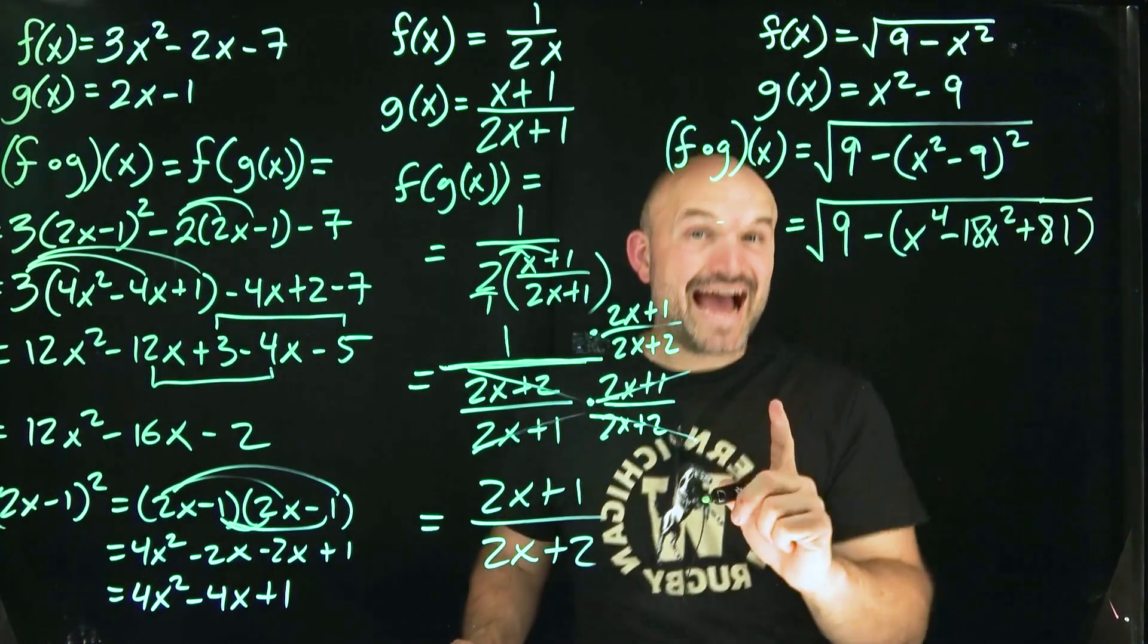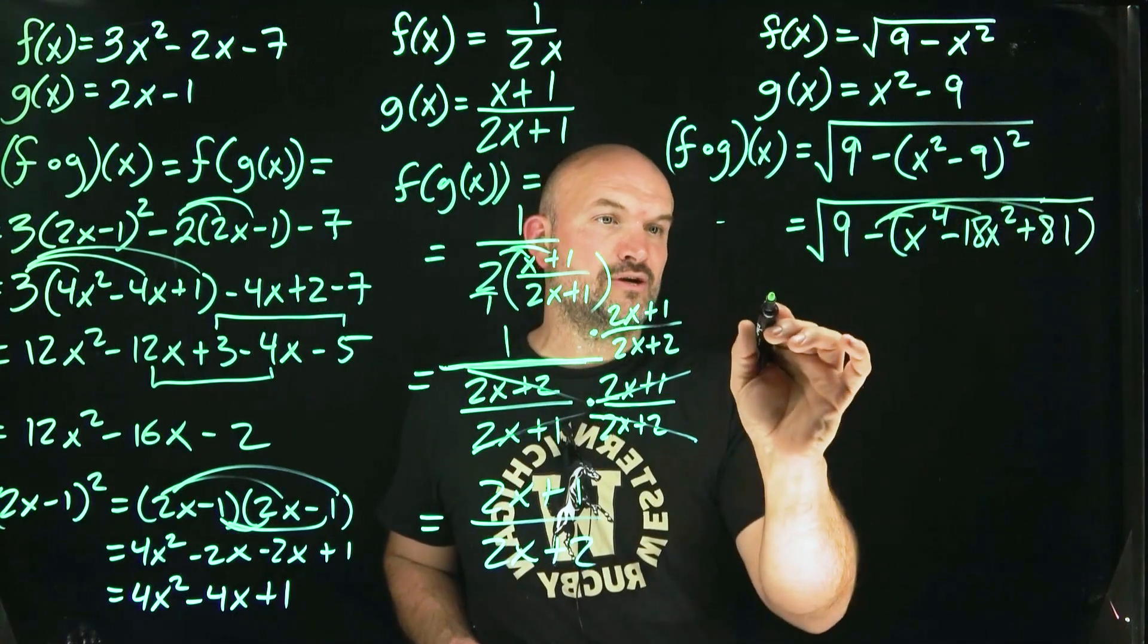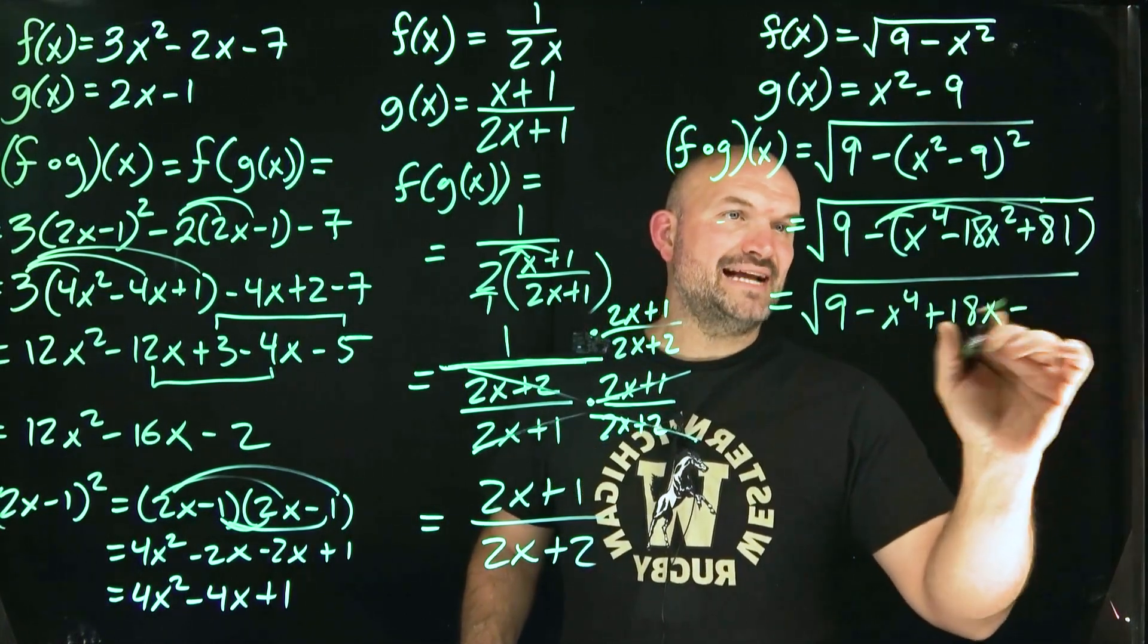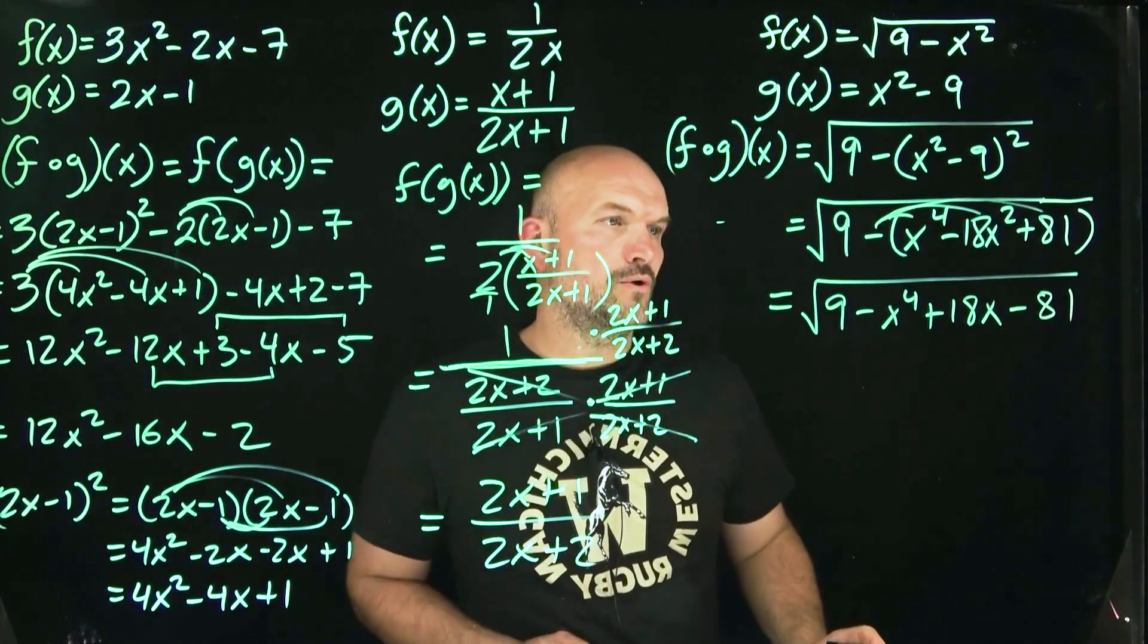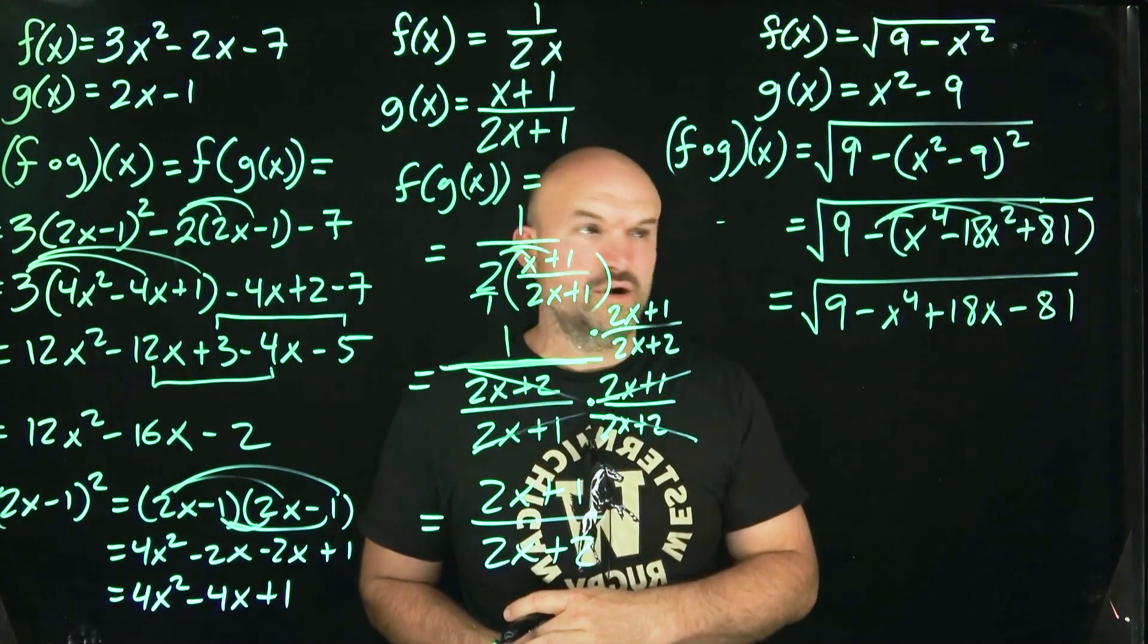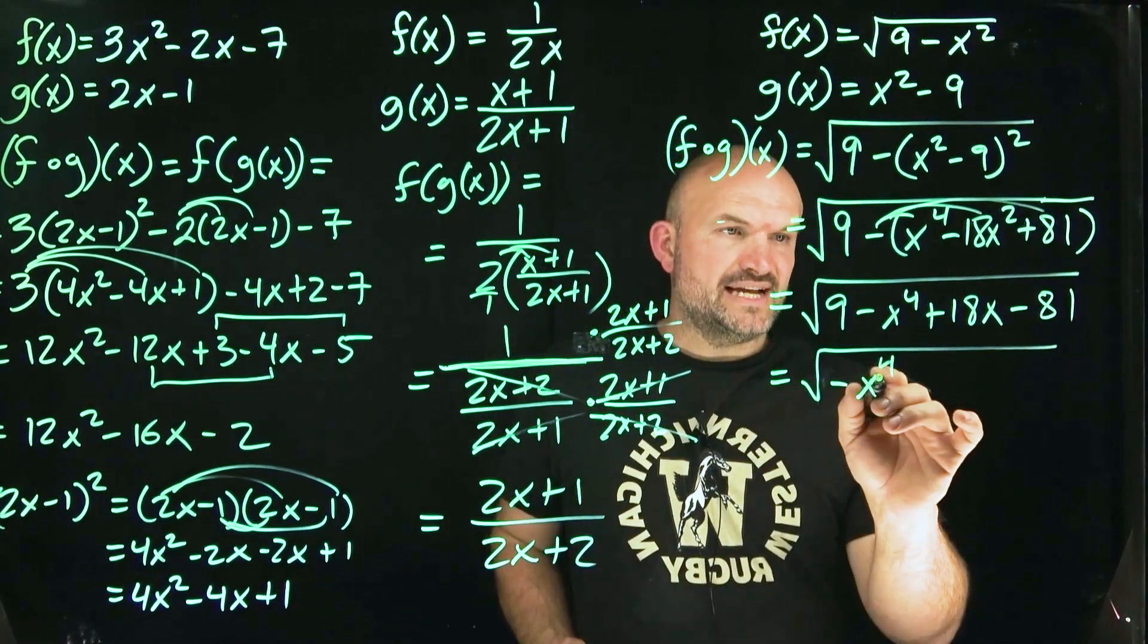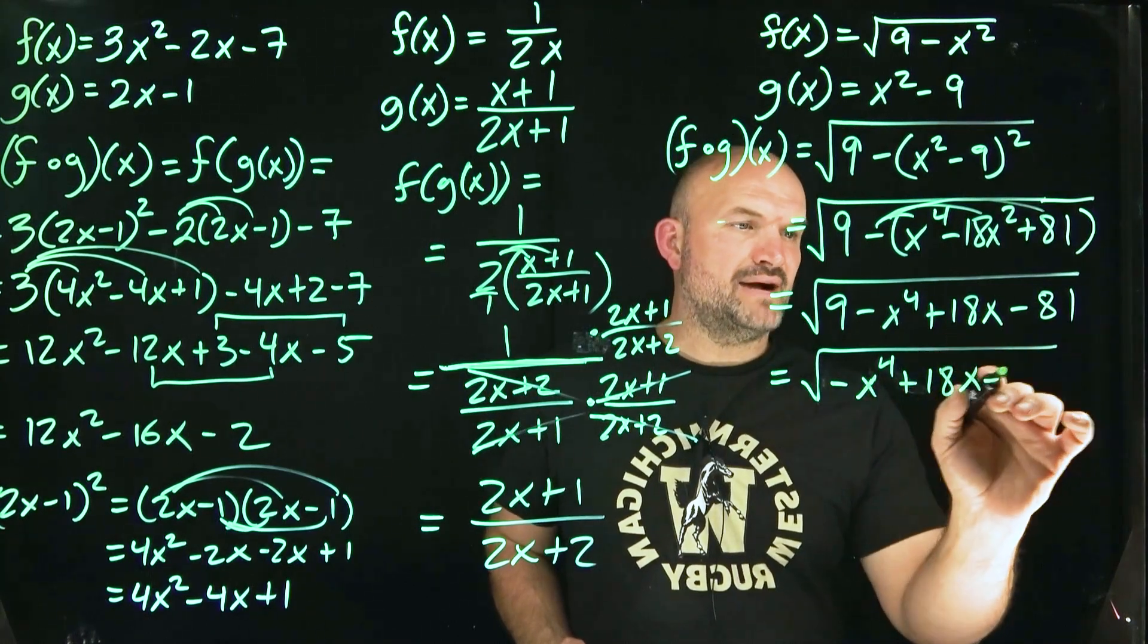So we have 9 minus, again, keeping the parentheses because I'm just multiplying this out. That's going to be x to the fourth minus an 18x squared and that's plus an 81. Okay. Now I'm done with this. Now I can go ahead and distribute this negative to each and every one of my terms. So now I have a 9 minus x to the fourth plus an 18x minus an 81. All right. So, well, let's go and simplify this, right? I can combine the 9 with the negative 81. That's going to give me a negative 72.